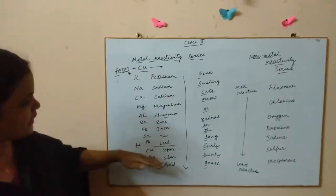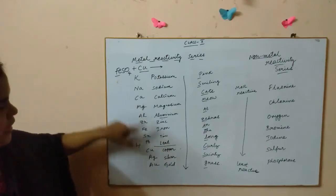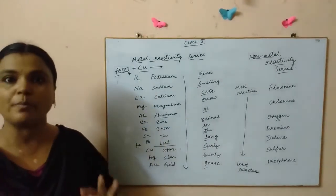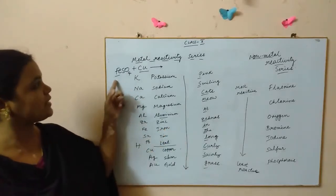Now you have to see what are the two elements, the metals that are present over here. One is copper, another one is iron. Now check in this metal reactivity series where is copper. Here is the copper and where is iron, somewhere up over here - iron.